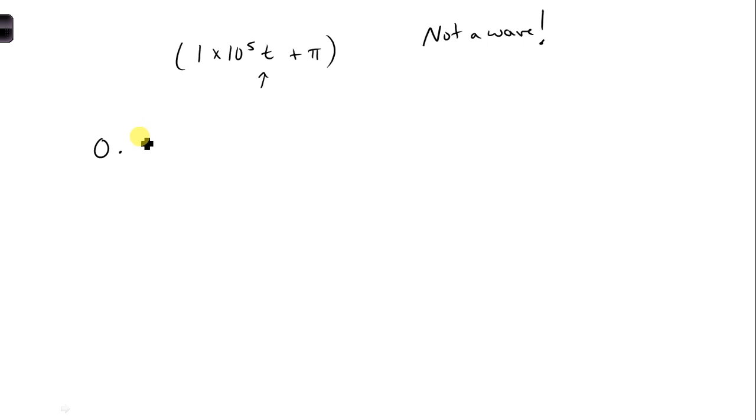So now we can apply Euler's identity. 0.5 E to the 0.25 D, and then we get E to the J pi, and we get E to the J 1 times 10 to the 5th T.